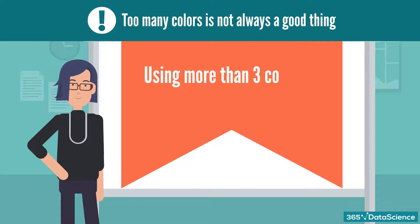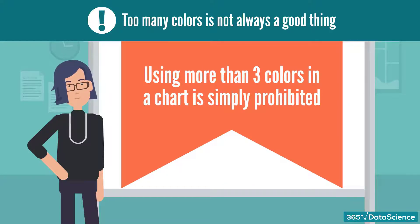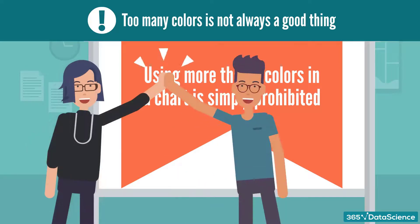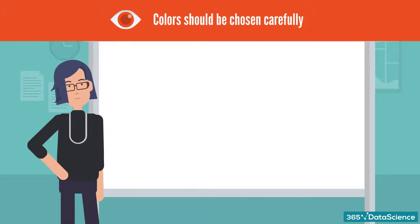So if you take away one principle from this lecture, it is that using more than three colors in a chart is simply prohibited. Usually, going for two colors is desirable, but a three-color scheme is the upper limit. Good, I'm sure you will remember that and stick with it throughout our work together. So we reach the third important part of this lecture. How to choose colors.